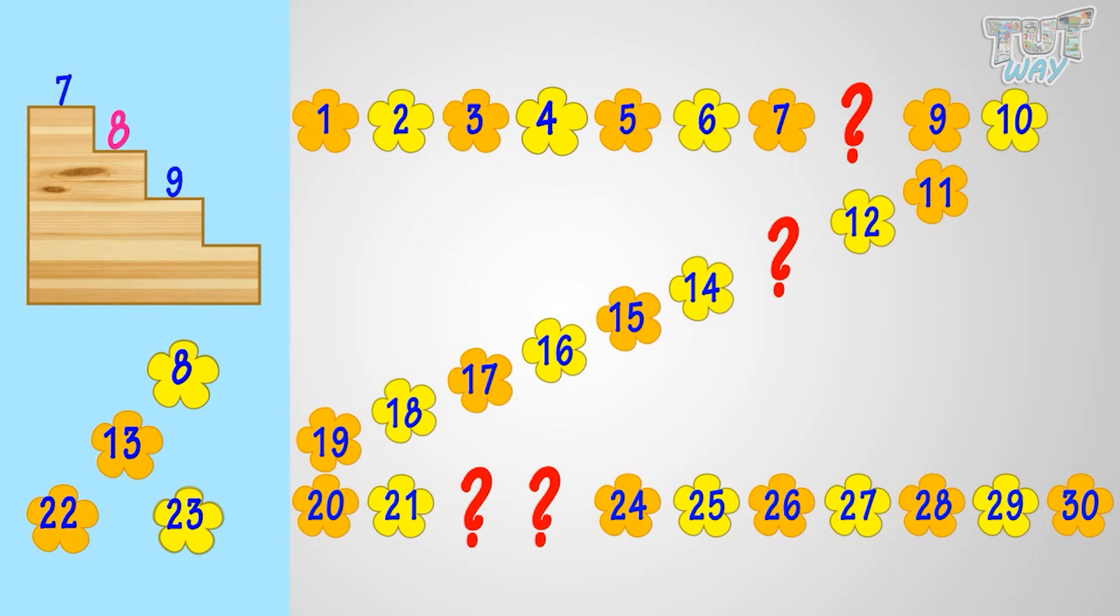For a number that comes before nine, count backward. Nine, eight, seven. Yeah! Eight comes before nine.